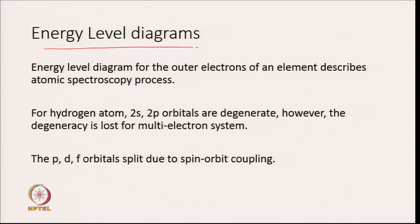The basis of atomic spectroscopy is the energy level diagrams of different atoms. The energy level diagram for the outer electron of an element describes the atomic spectroscopy process, so outer electrons are very important. For example, in alkali metals the outer electrons are in S orbitals, and the one electron in the outermost S orbital describes the atomic spectroscopy process.